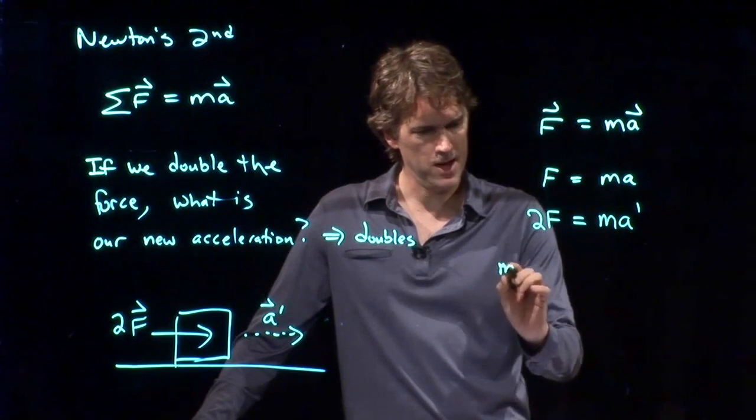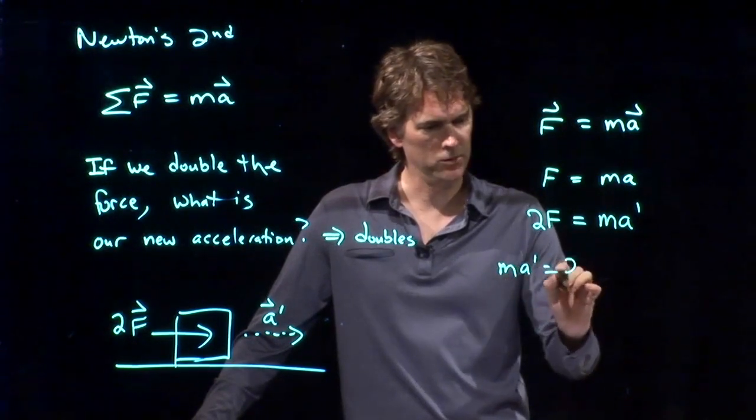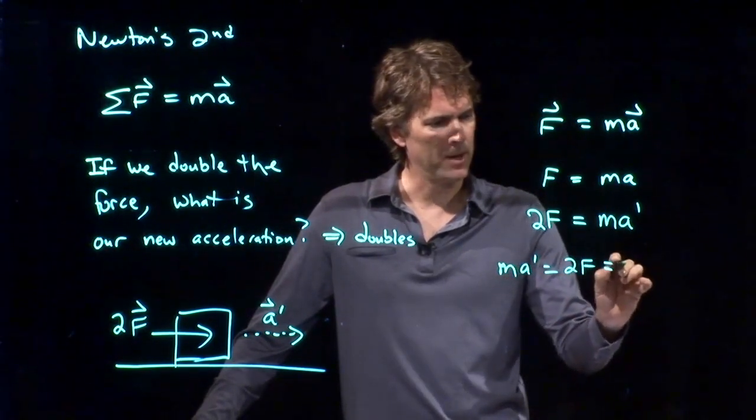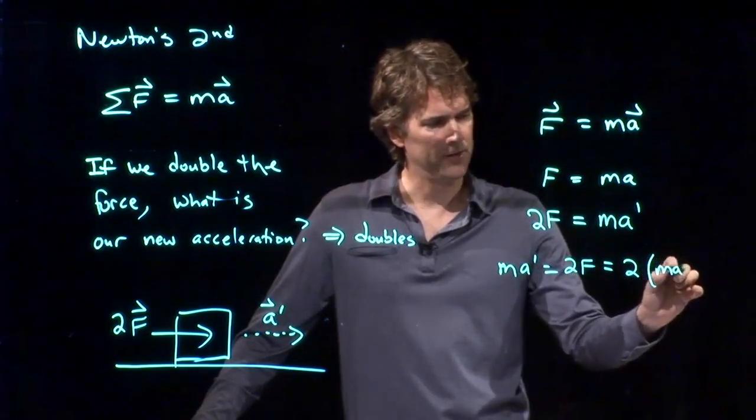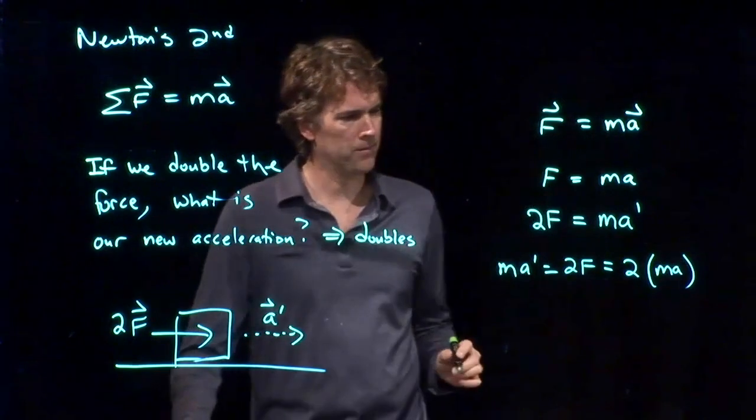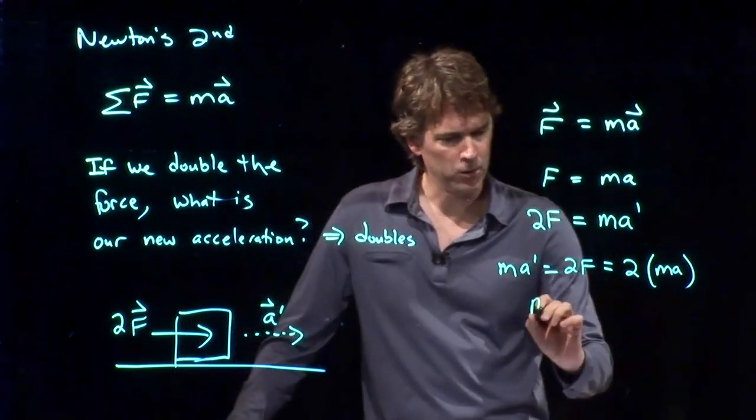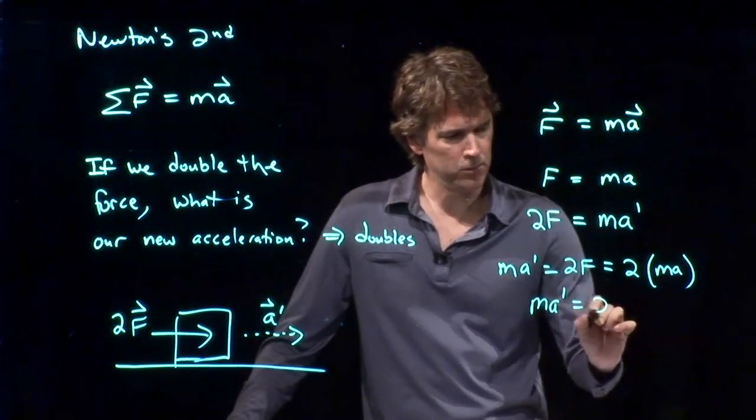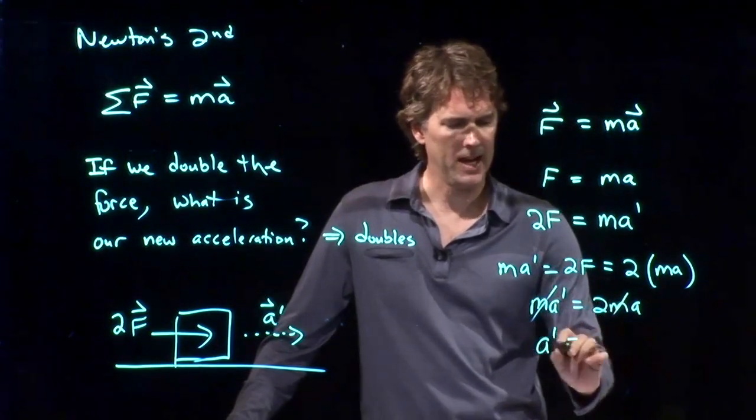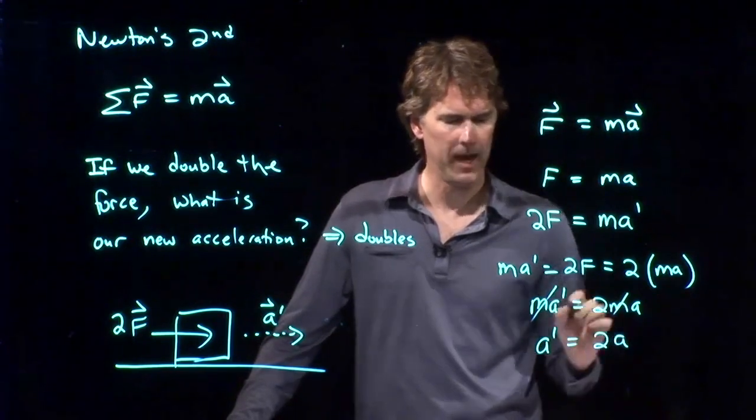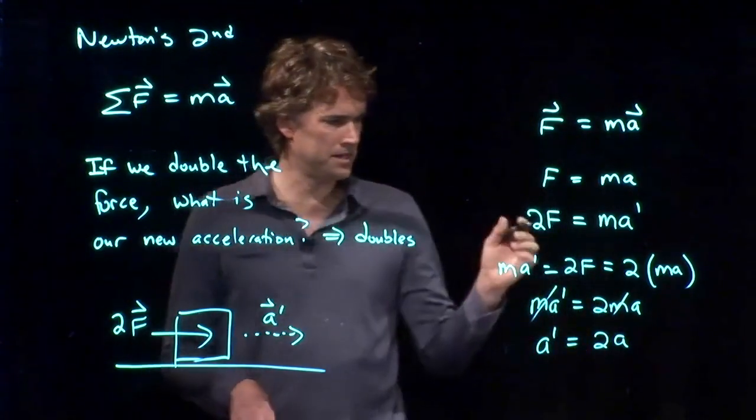What do I do? I have ma prime equals 2F. But I know what F is from my earlier equation—that's just m times A. And now I have one equation: ma prime equals 2ma. I can divide both sides by m, and I get A prime is equal to 2a. Absolutely, it doubles.